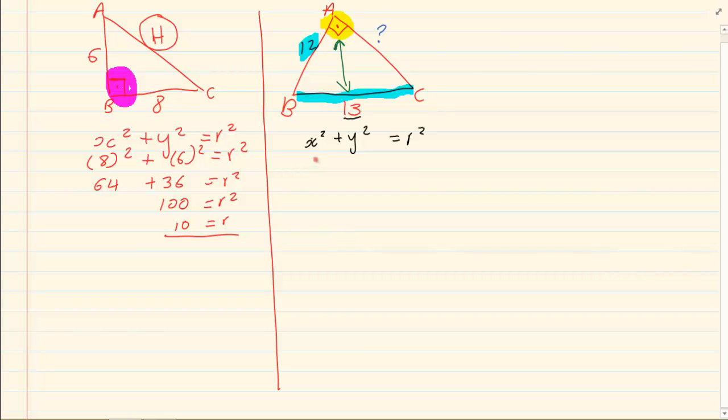Now let's substitute what we have. We have 12 squared plus, we don't know the other side, is equal to 13 squared. Now we are going to use our methods of solving for x or solving for an unknown. So we have y squared is equal to 169 minus 144.